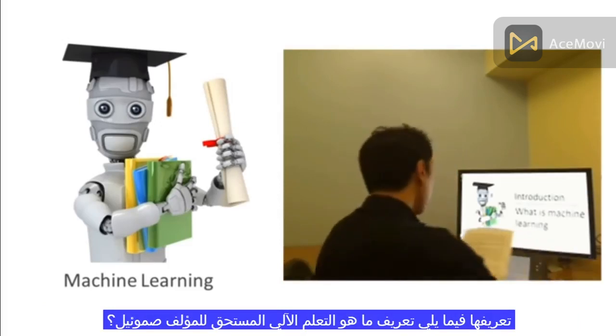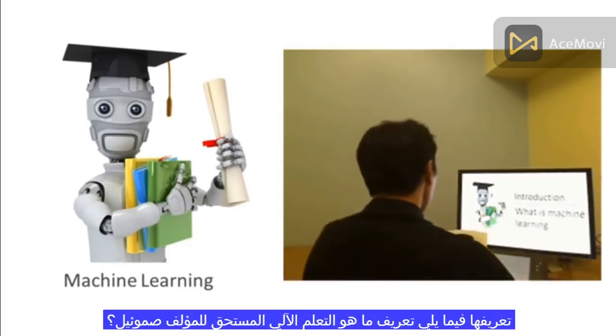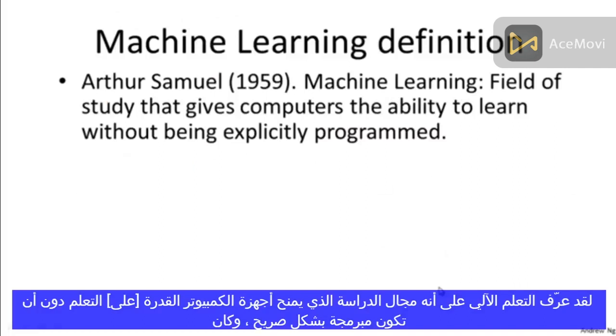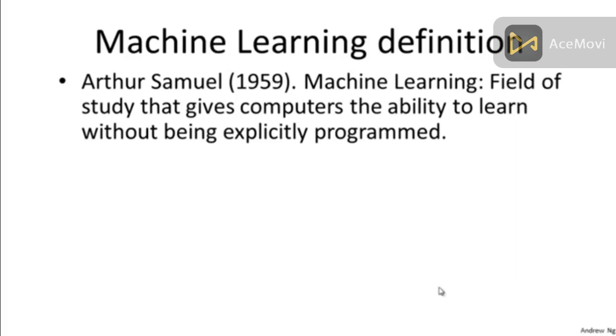Here's a definition of what is machine learning that is due to Arthur Samuel. He defined machine learning as the field of study that gives computers the ability to learn without being explicitly programmed.